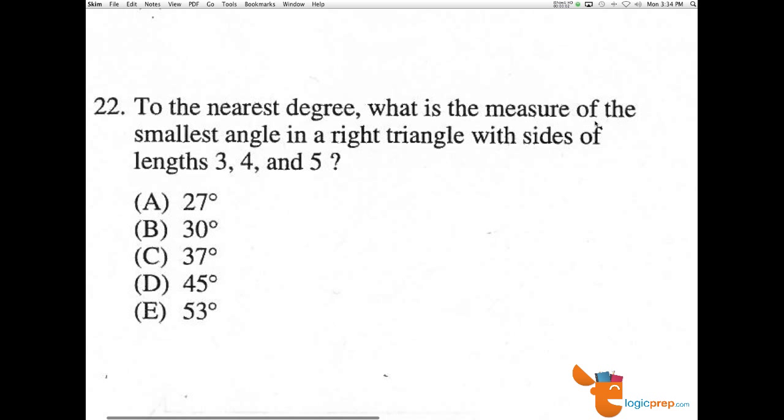Number 22, to the nearest degree, what is the measure of the smallest angle in a right triangle with sides 3, 4, and 5?